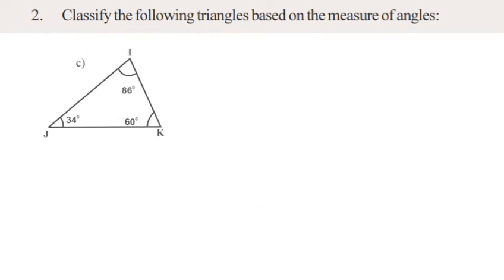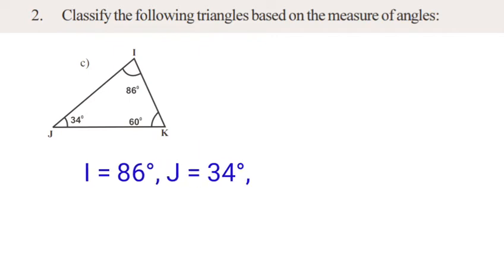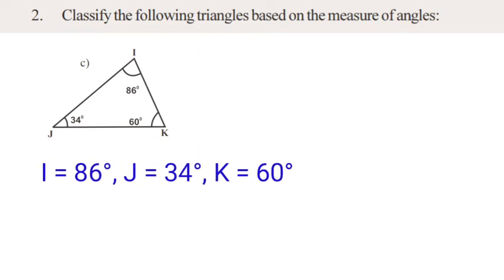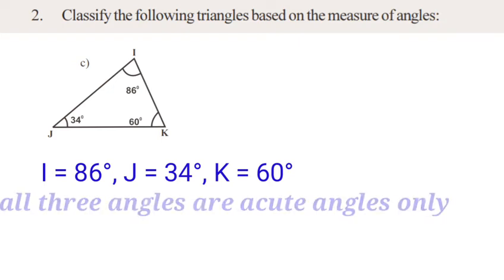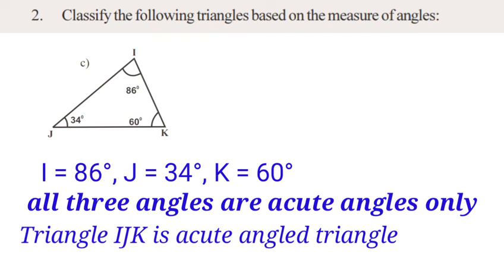Next, problem 2C. Observe triangle IJK: angle I is equal to 86 degrees, angle J is equal to 34 degrees, angle K is equal to 60 degrees. All three angles are acute angles, so the type of triangle is called an Acute Angle Triangle.